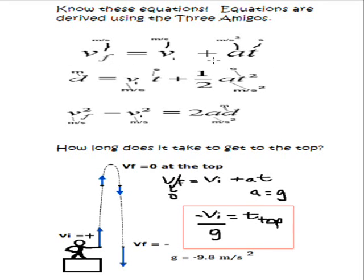It says the final speed is equal to the initial speed plus the acceleration times the time, and we'll derive an equation to figure out how long it takes to get to the top. So we've got VF equals VI plus AT. We know at the top of the trajectory that the final speed has to be zero.